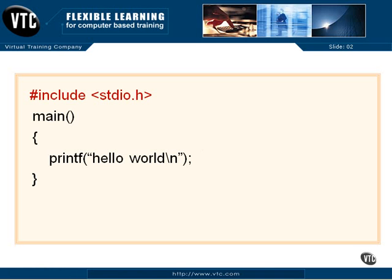Now we're going to take a look at each line of our Hello World program just to make sure we truly understand what is going on here, and to give you a little overview of what is happening in the program and what these different parts are called. You're going to see all of these different areas in more detail as we go through the other chapters, but I want you to have a good idea of these different sections and how they work together.